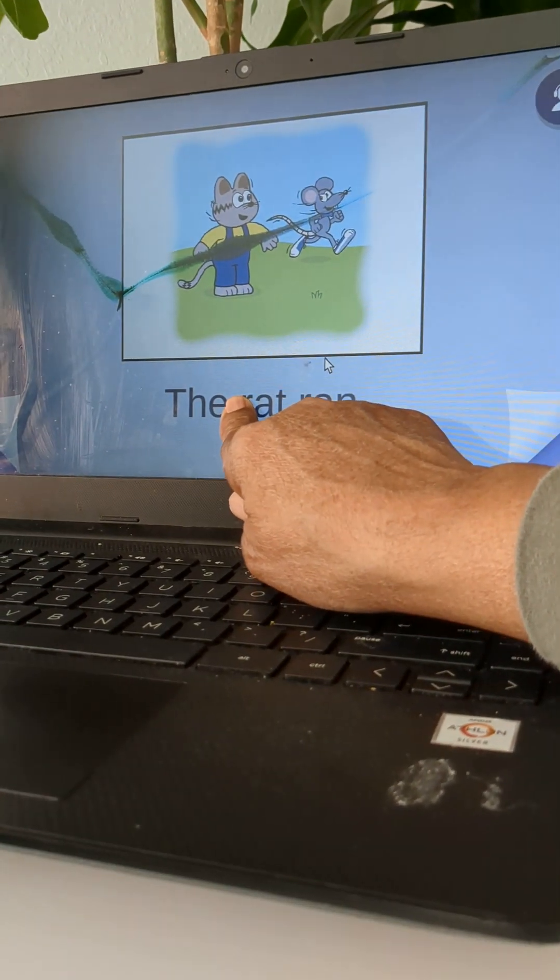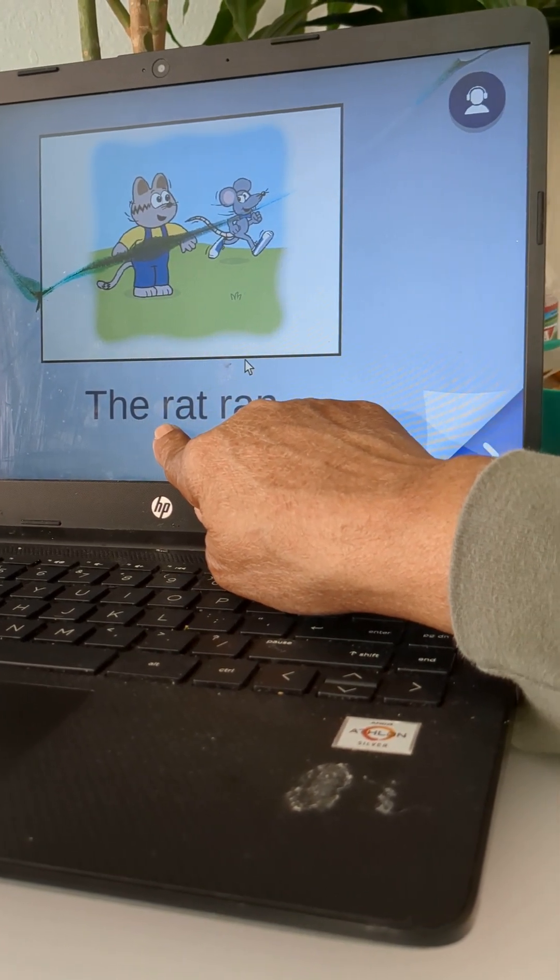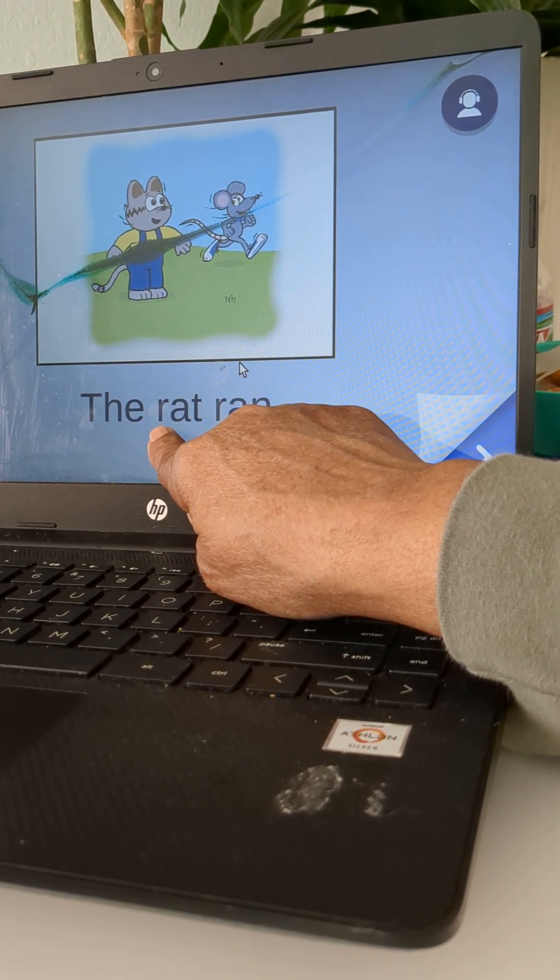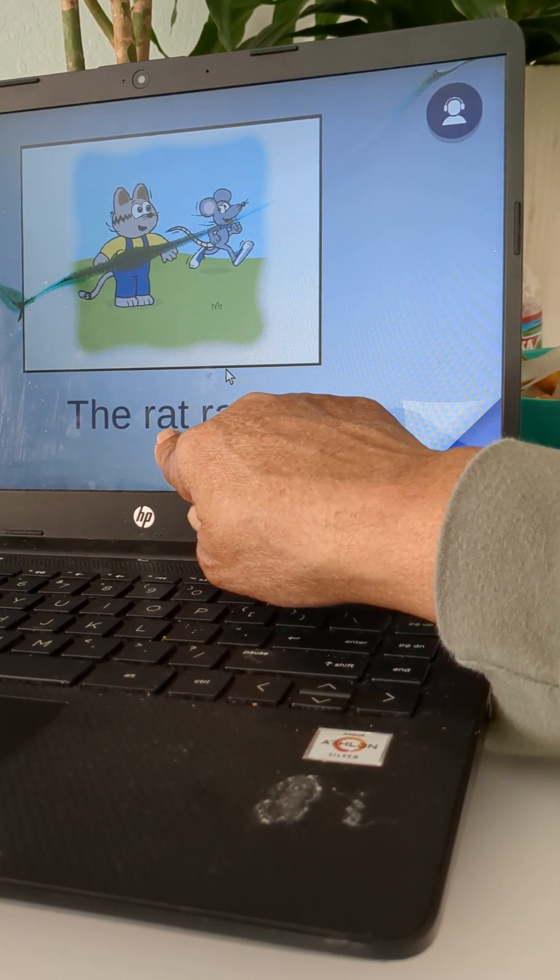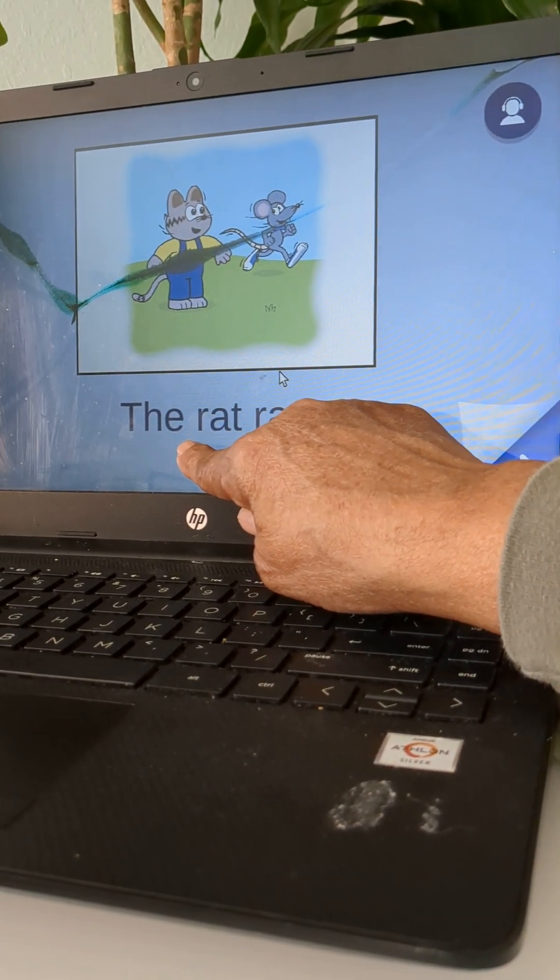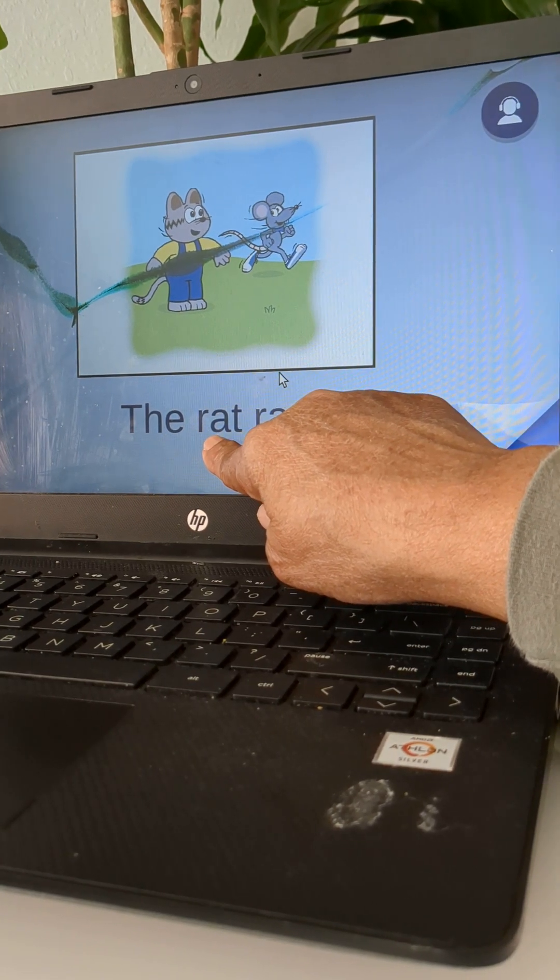What is A-T? At. What is R? What sound does R make? Er. And A-T? At. Put it together? Rat. Rat.